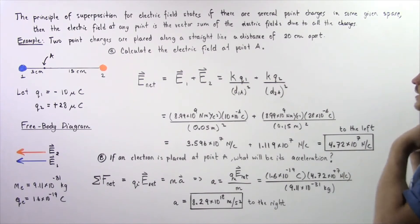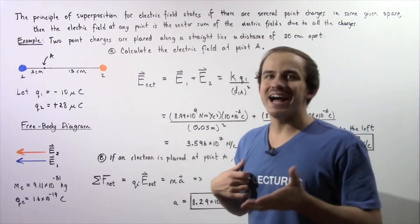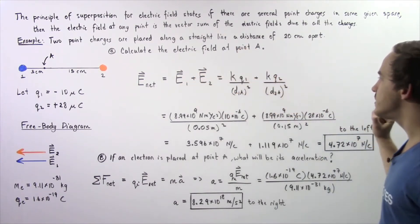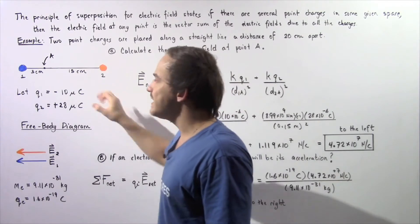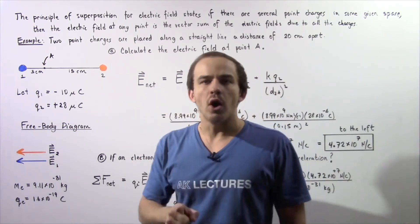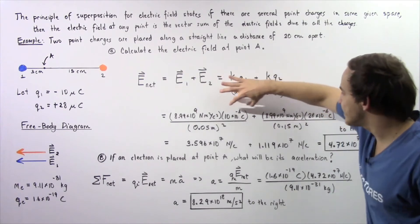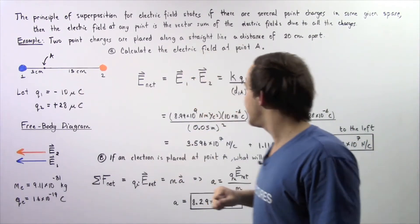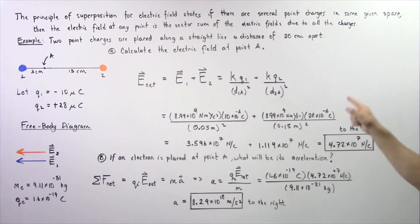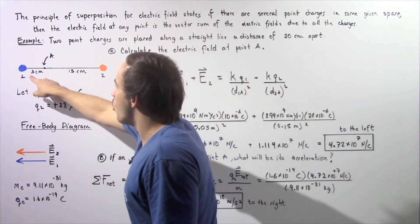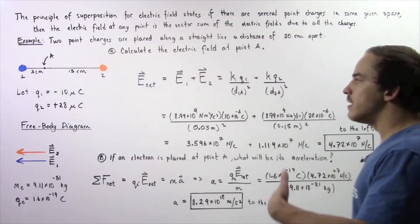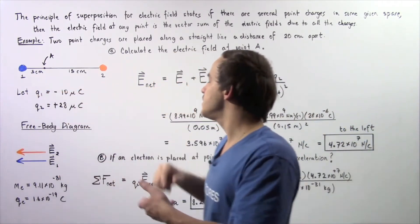E2 becomes K times Q2 divided by D2A squared, where D2A is the distance from point A to point charge two. Plugging in values: K is 8.99 times 10 to the 9 N·m²/C². Q1 and Q2 are in micro coulombs, so we multiply by 1 times 10 to the negative 6 to convert to coulombs. Q1 becomes 10 times 10 to the negative 6, and Q2 becomes 28 times 10 to the negative 6. The distance to charge one is 0.05 meters squared, and to charge two is 0.15 meters squared.